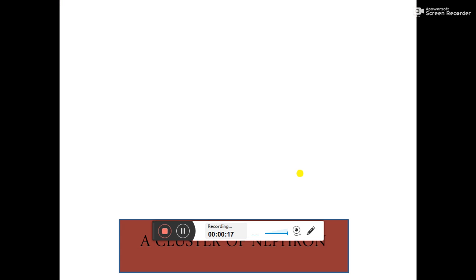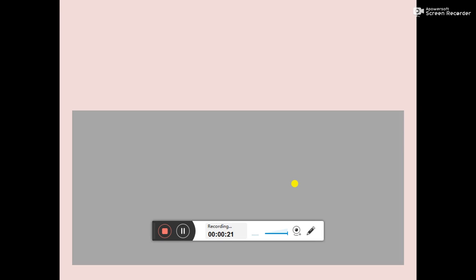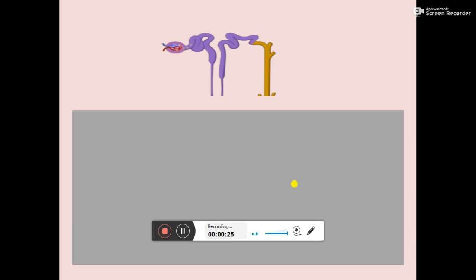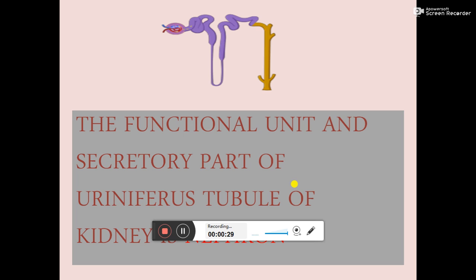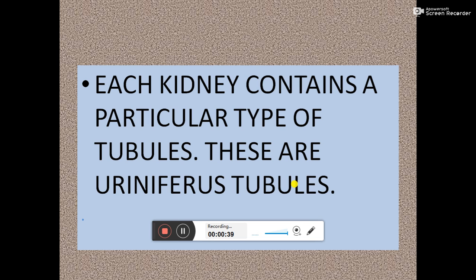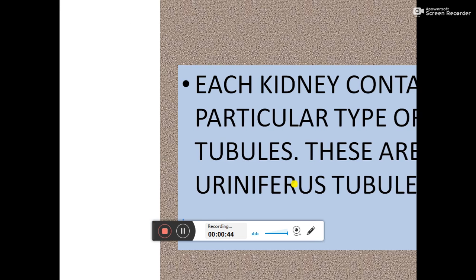What is a nephron? In this picture we can see a cluster of nephrons. The functional unit and the secretory part of a uriniferous tubule of the kidney is the nephron. Each kidney contains a particular type of tubules called uriniferous tubules.